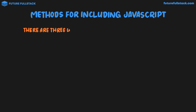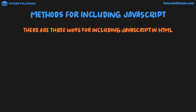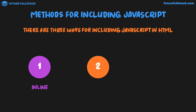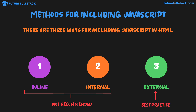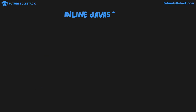There are three ways for including JavaScript in HTML. The first method is inline JavaScript. The second method is internal JavaScript. And the third method is external JavaScript. Inline and internal JavaScript are not recommended, as we'll see why soon. External JavaScript is best practice. These methods — inline, internal, and external — are the exact same pattern as CSS.